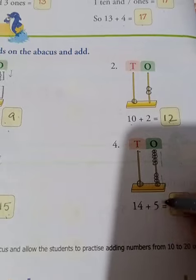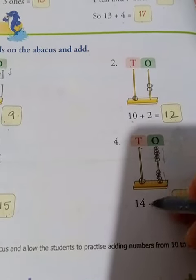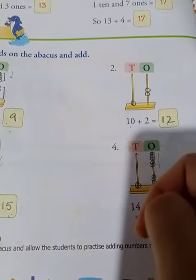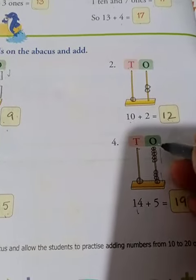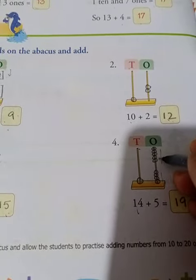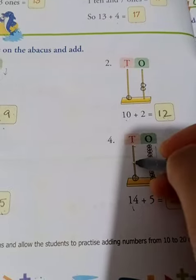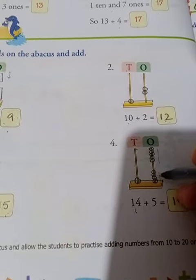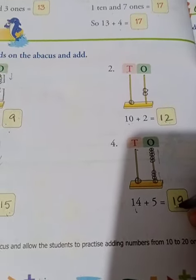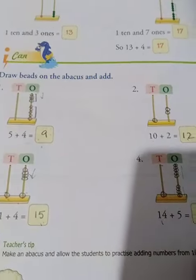Fourteen - we add 5 more: 1, 2, 3, 4, 5. That means 1 ten and 9 ones, which equals 19. Okay, thank you.